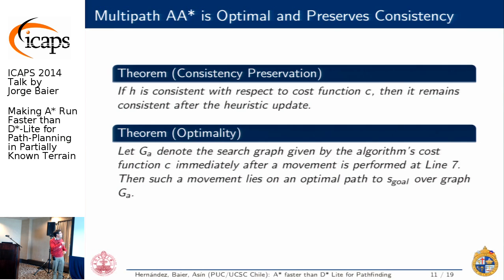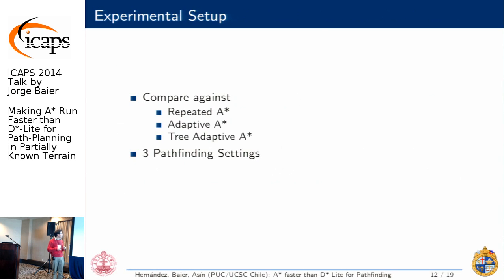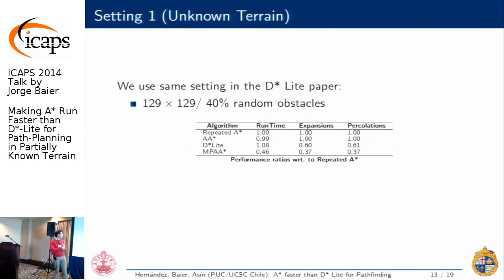Two important theorems cover consistency preservation and optimality. For experimental evaluation, we used the same setting as the D* Lite paper: small grids with varying percentages of obstacles, initially unknown. The table shows performance ratios relative to repeated A*, where one is baseline, more is worse, and less is better. D* Lite is not that different from repeated A*, but our algorithm completes the task in about half the time.